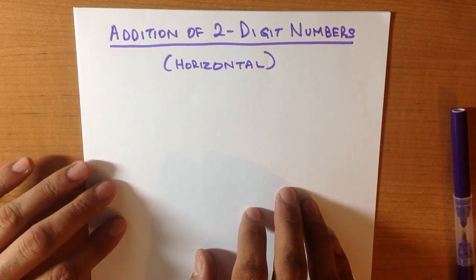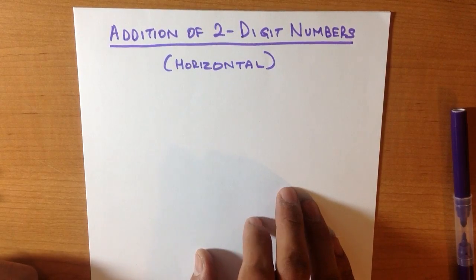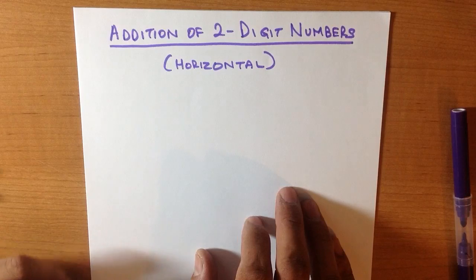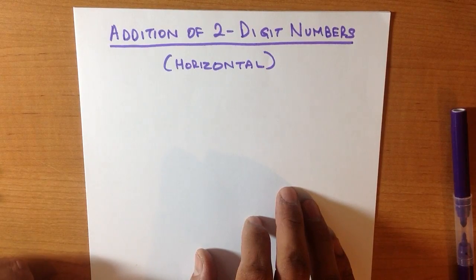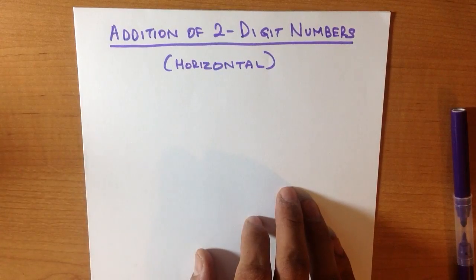In this tutorial we will go through addition of two-digit numbers using the horizontal method. We have already gone through two-digit numbers using the vertical format in another tutorial. This is the next step forward.